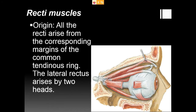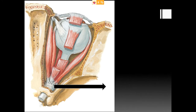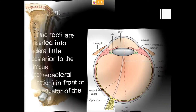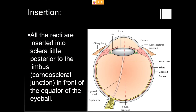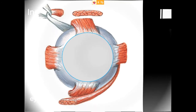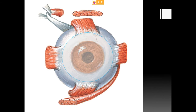All four recti muscles arise from the corresponding margins of the common tendinous ring of Zinn. The lateral rectus arises by two heads — one from the tendinous ring and one from the sphenoid bone. All recti muscles are inserted into the sclera, slightly posterior to the corneoscleral junction, in front of the equator of the eyeball.